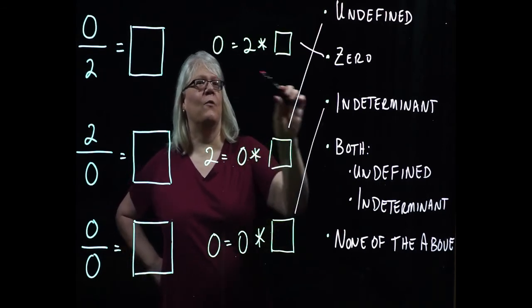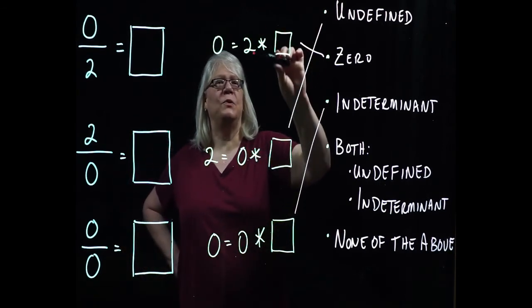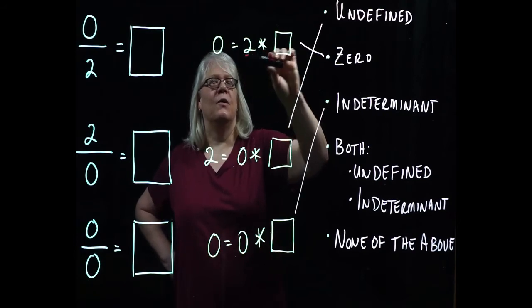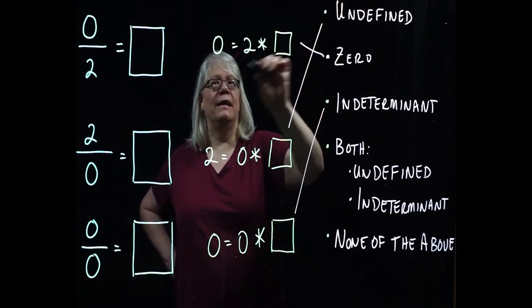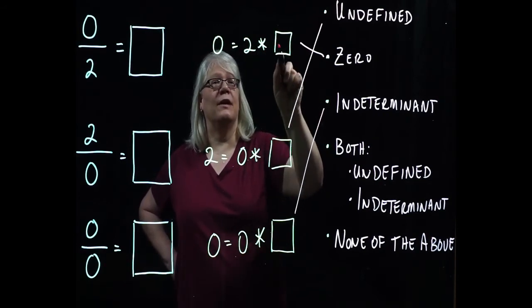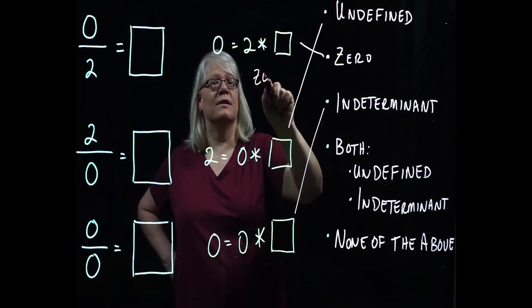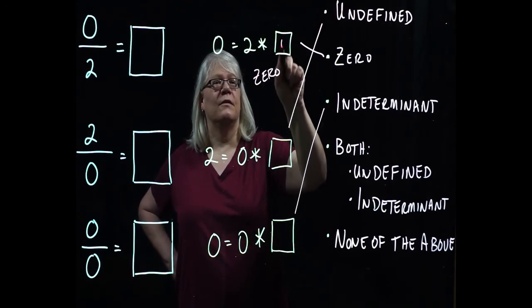All right, on this first one I say, okay, what number times two is going to give me zero? Well, I know that if I multiply zero by any number, I get zero, so the only value that I can actually put here is zero. Good.